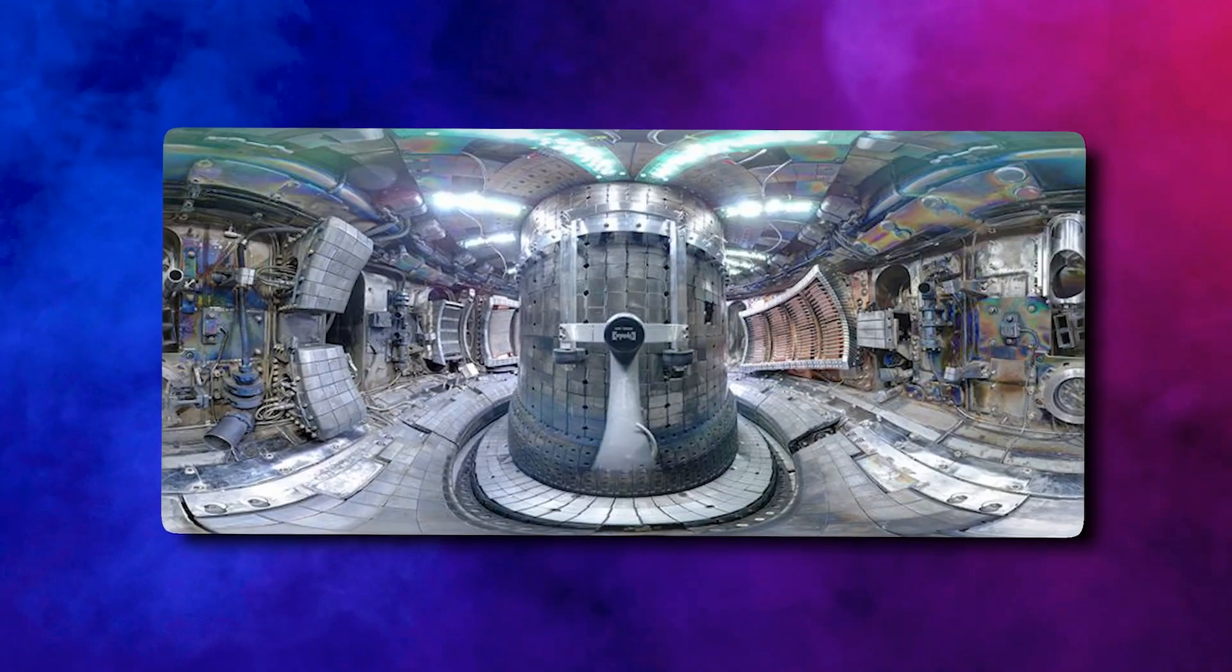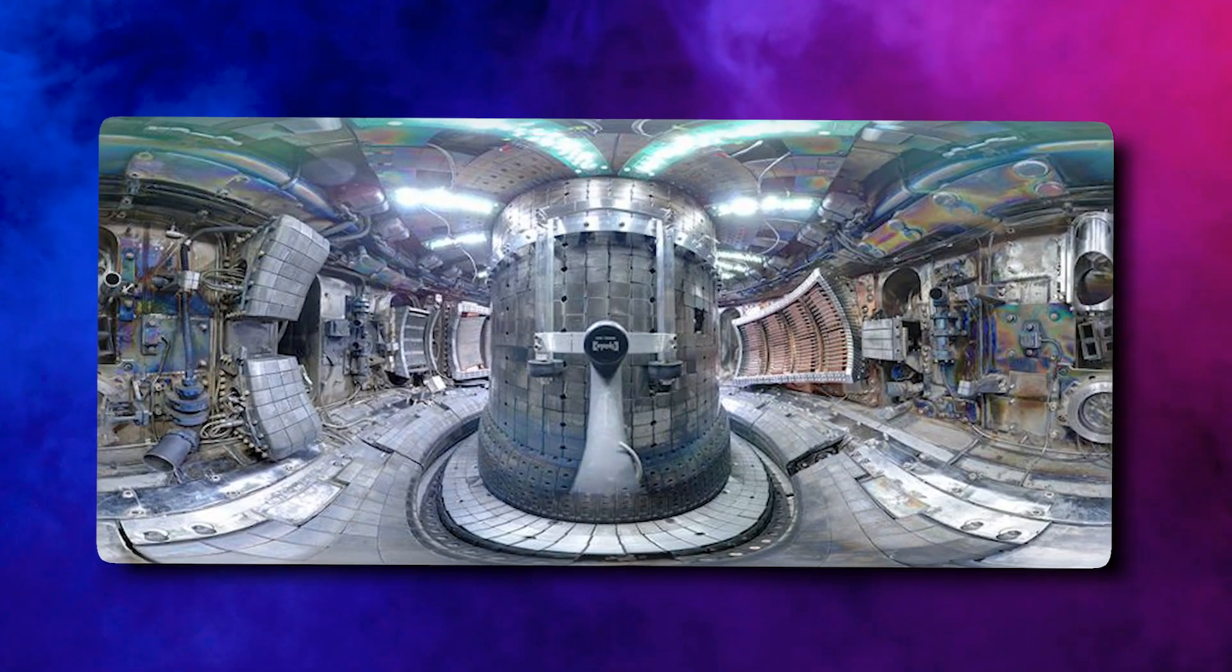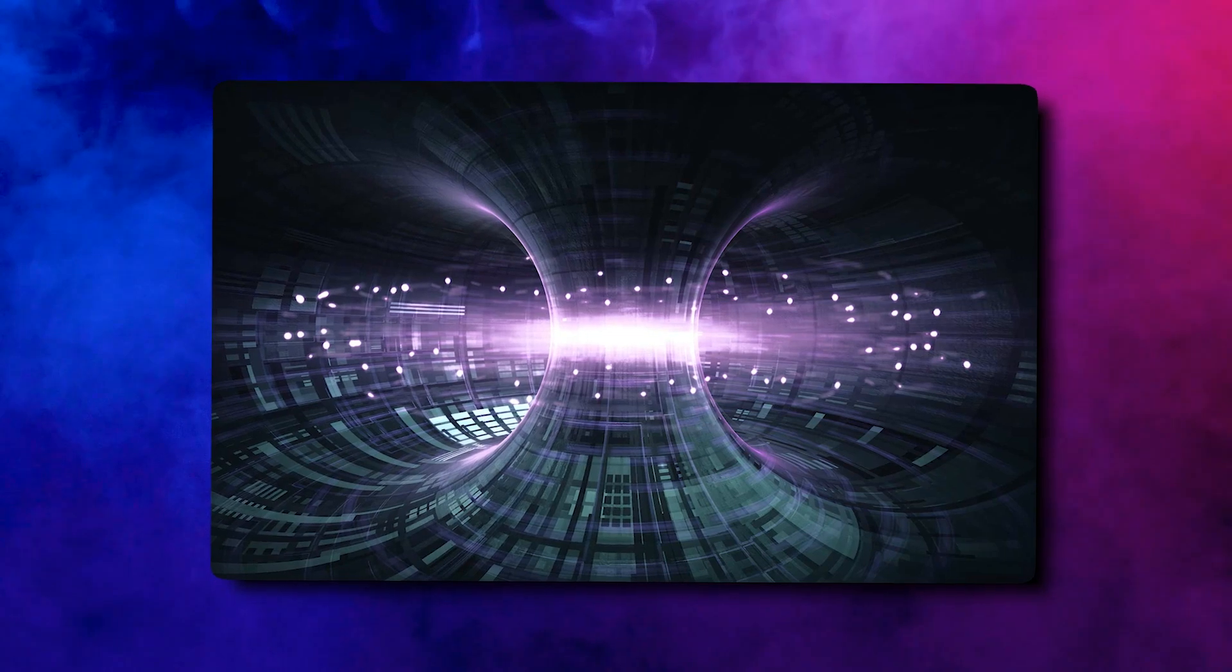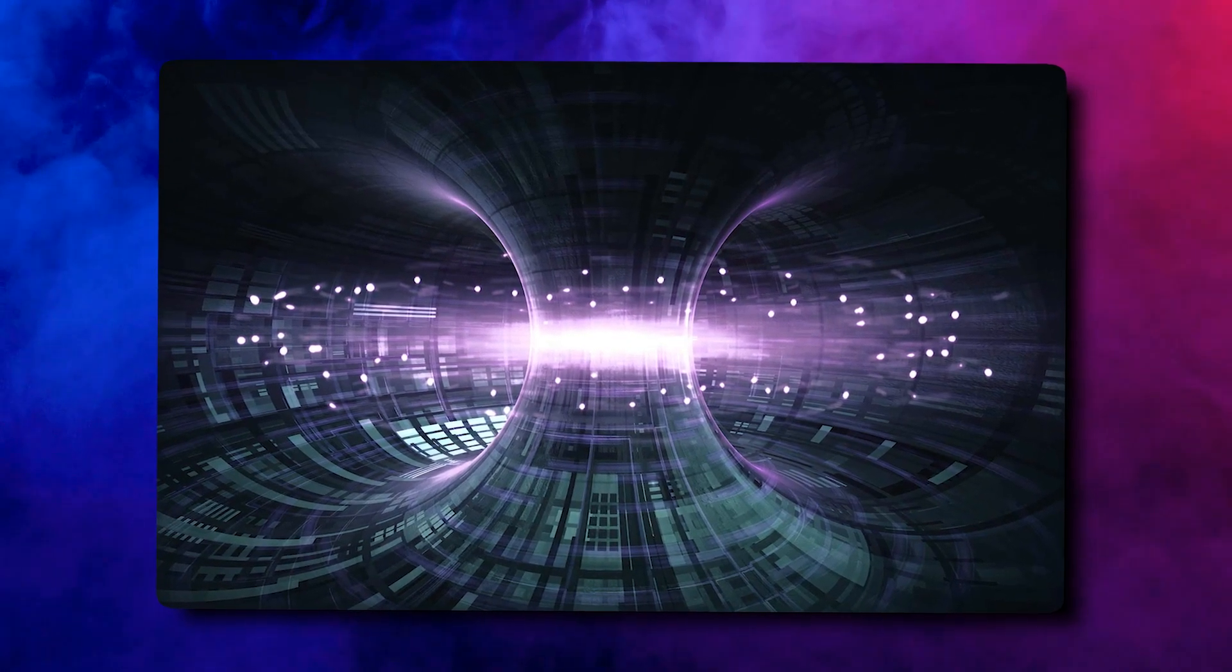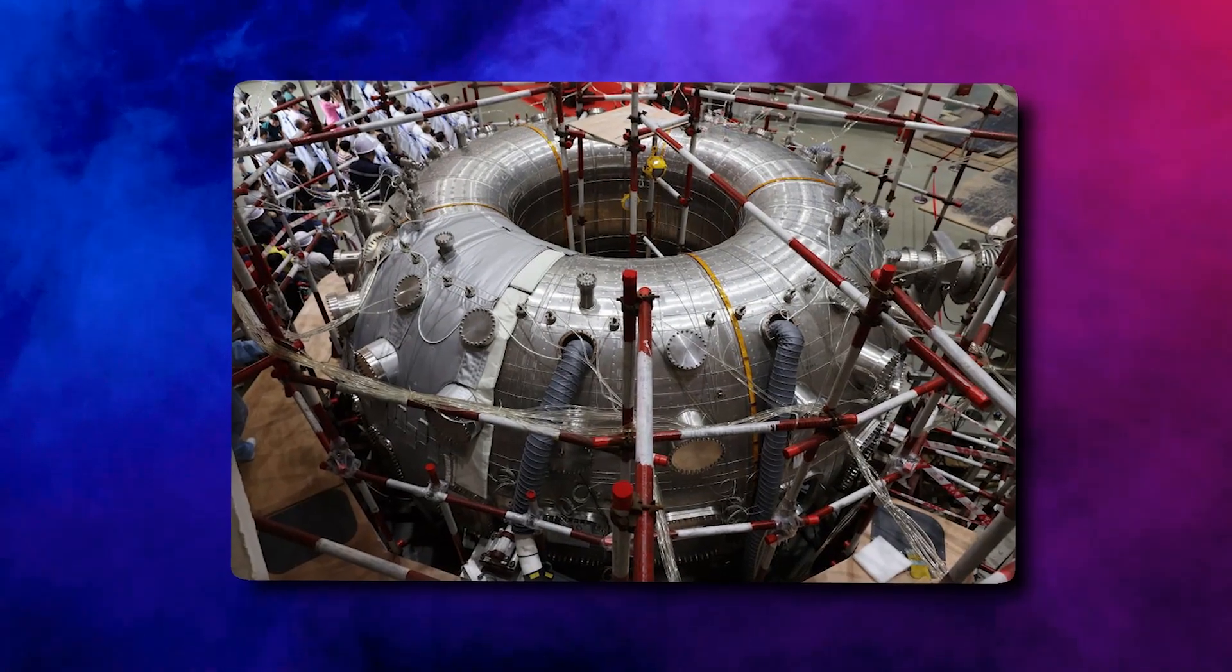Tokamaks are getting a new start, thanks to the use of different superconducting materials that could make magnetic confinement more possible. The magnets on Commonwealth Fusion Systems' spark reactor are made of yttrium barium copper oxide, or YBCO, which is a high-temperature superconductor. The company grew out of MIT.